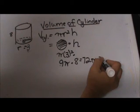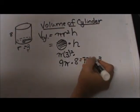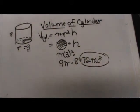Volume is always in units cubed because it is 3 dimensions. So there we go, and that's how you find the volume of a cylinder.